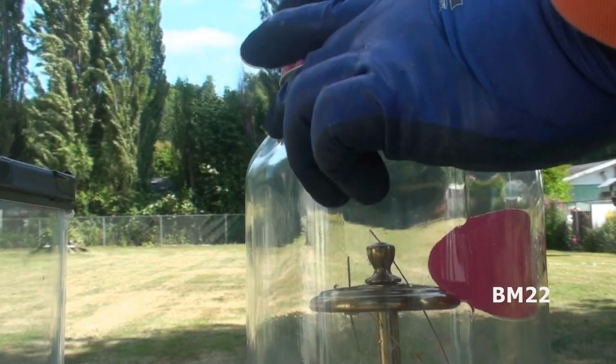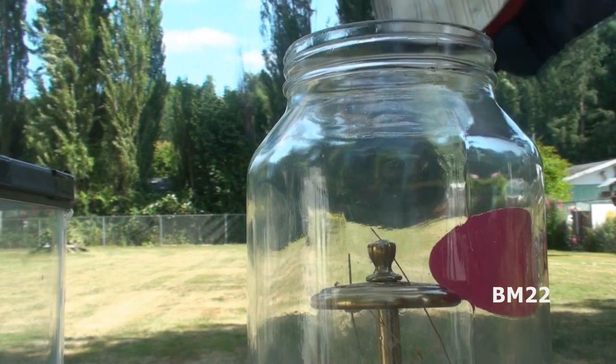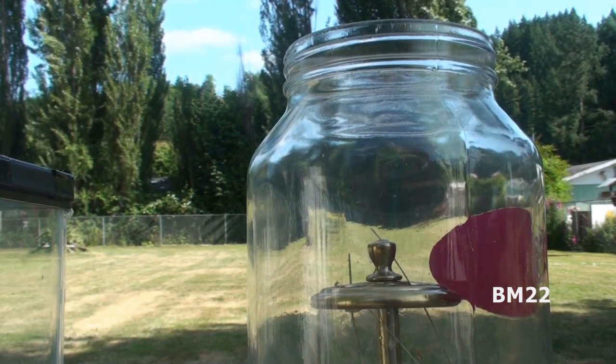Now the second tank, which is the spider jar, the Black Widow spider observation jar, we're going to remove the egg sack from there.